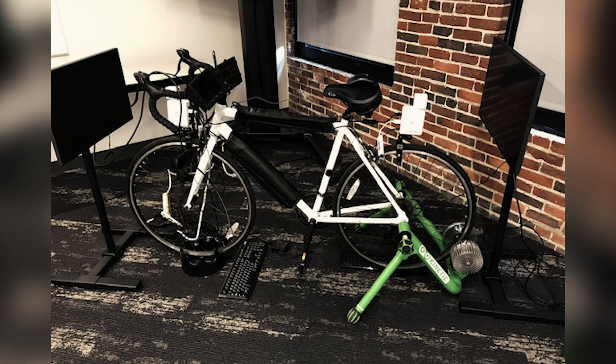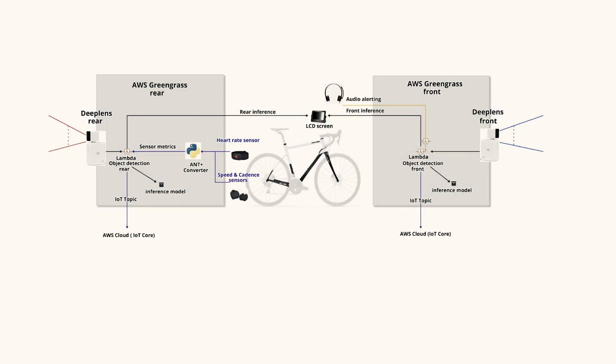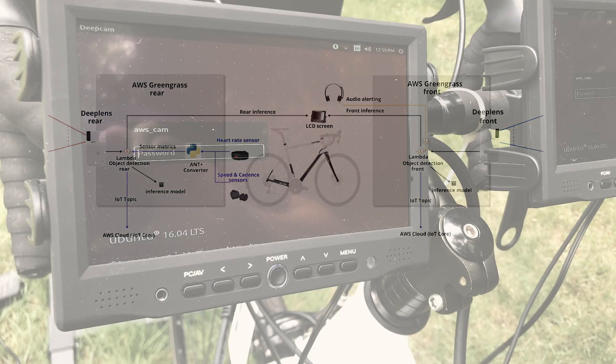Today I'd like to introduce you to the Smart Cycle. Smart Cycle is basically our way of building out a platform that tries to combat two problems with cycling. One is safety — we're trying to make cycling safer for riders. The second part is treating the bicycle as a data collection platform using sensors.